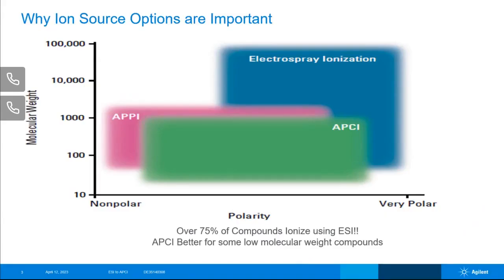When turning molecules into ions, the chemical properties of the target compound are important for selecting the best technology. Here we're showing the overlap of three different types of ionization: electrospray, or ESI, APCI, and then in red we have APPI.